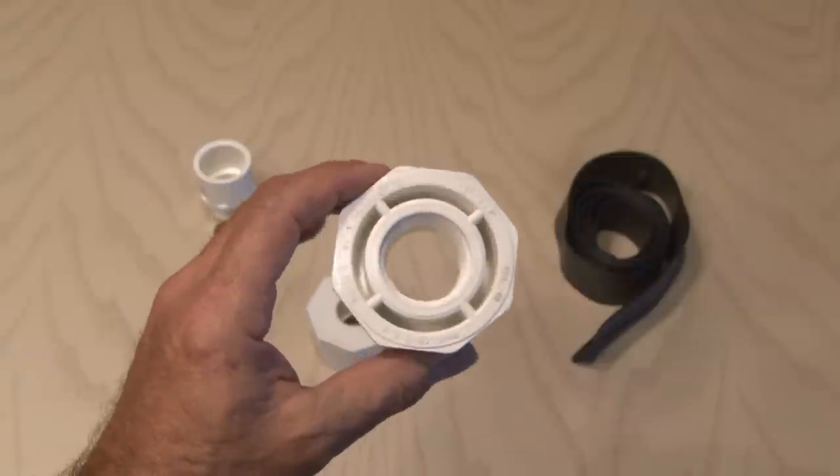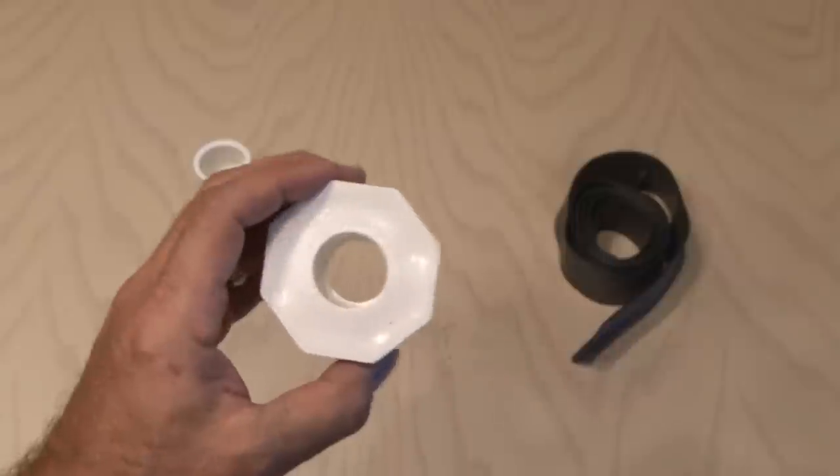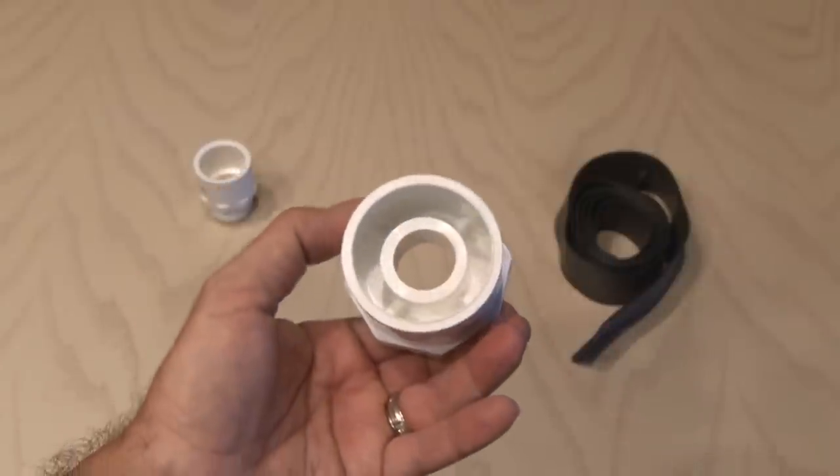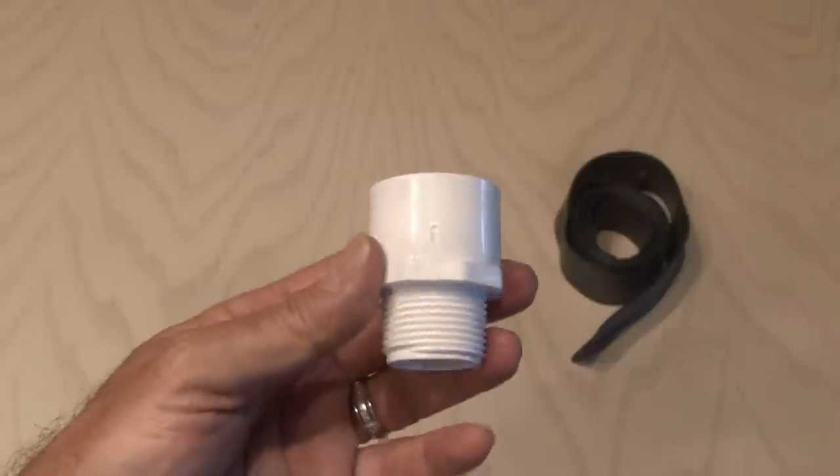This will be inserted in the T and has threads for 1-inch pipe. Next up, a 2-inch to 3-quarter inch adapter. This has a smooth 3-quarter inch end for our pipe. And finally, a 1-inch threaded slip adapter.